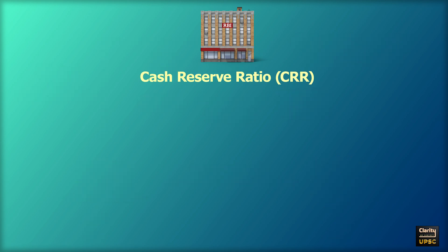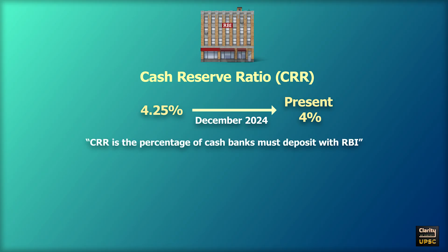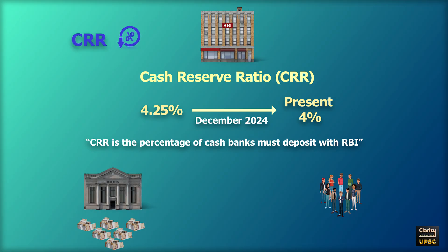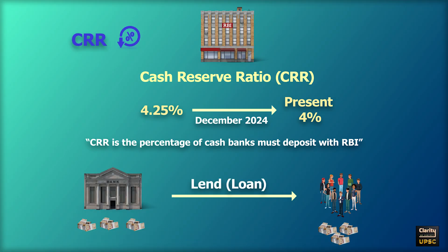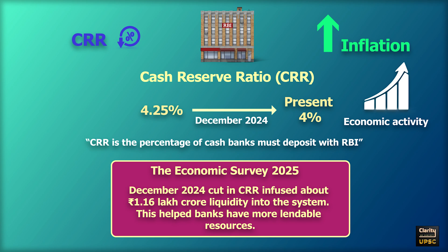Next is Cash Reserve Ratio or CRR. It is currently 4%, decreased from 4.25% in December 2024. CRR is the percentage of cash banks must deposit with RBI. If RBI reduces CRR, banks have more money to lend, which helps increase loans and economic activity, though it can also increase inflation. Economic Survey 2025 says that the December 2024 cut in CRR infused about 1.16 lakh crore rupees of liquidity into the system, helping banks have more lendable resources.